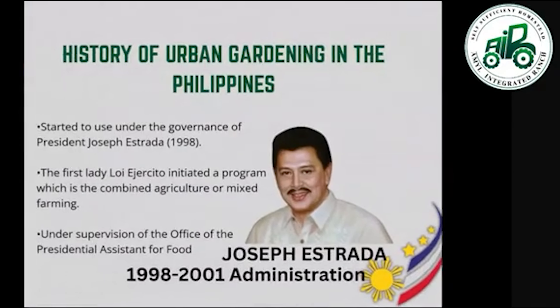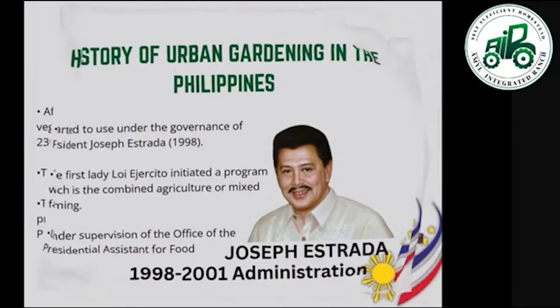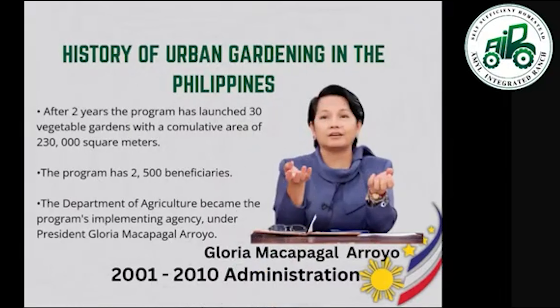The history of urban gardening in the Philippines started under the governance of President Joseph Estrada in 1998. First Lady Loi Ejército initiated the program of combined agriculture or mixed farming under the supervision of the Office of the Presidential Assistant for Food. After two years, the program launched 30 vegetable gardens with a cumulative area of around 230,000 square meters, and the program had 2,500 beneficiaries.